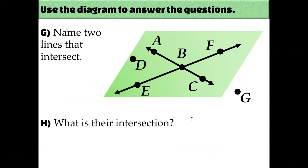Now let's name two lines that intersect. Well there's only two lines already drawn on our diagram for us, and yes indeed they do intersect, so I would say that line AC and line EF intersect at point B.